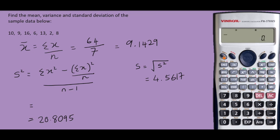To get the rest of the values, we simply select shift 1 and select 1 for the sum of X square.